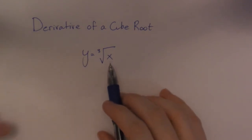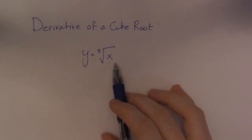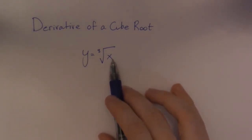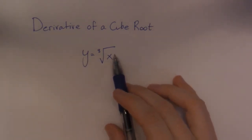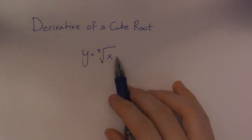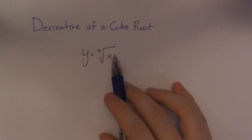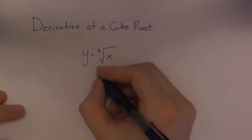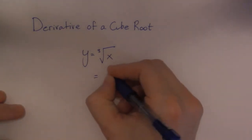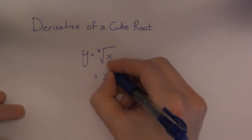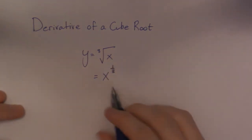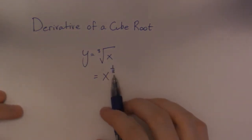So the derivative of anything — a root, square root, fourth root, anything like that — it's always easier to think of it as the exponential form. So a cube root is the same as an exponent of 1 over 3.